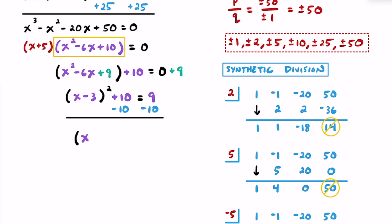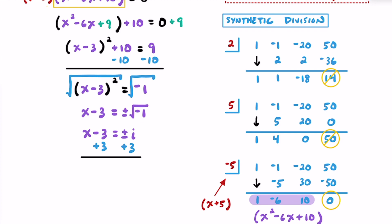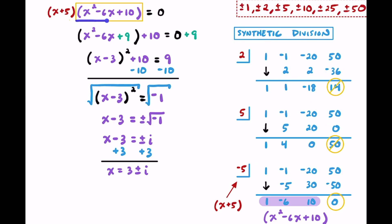Subtracting 10 from both sides gives us x minus 3 squared equals negative 1. This is why we couldn't factor — the square root of negative 1 is not a real number. Taking the square root of both sides, x minus 3 equals plus or minus the square root of negative 1, which is plus or minus i. Adding 3 to both sides, x equals 3 plus or minus i. So the two values that make the quadratic equal 0 are 3 plus i and 3 minus i — two complex or imaginary solutions.